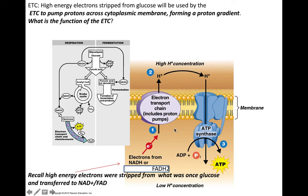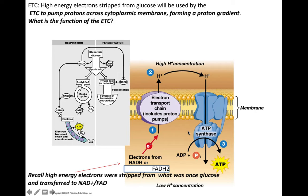In a bacterium, protons are pumped from the cytoplasm across the cell membrane to the extracellular side, creating a proton gradient — higher hydrogen ions outside than inside. This is active transport against the concentration gradient, requiring membrane proteins and energy from the high-energy electrons that were part of glucose. The redox reactions of the ETC form the proton gradient, and then the proton gradient drives massive ATP synthesis by ATP synthase.